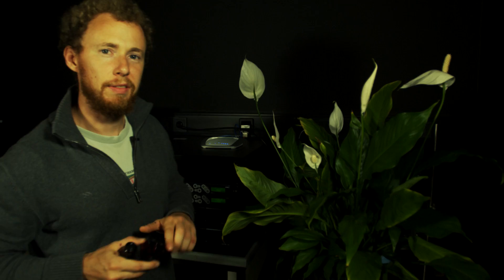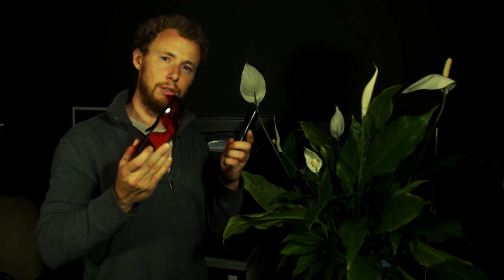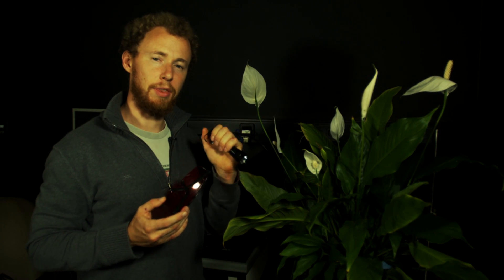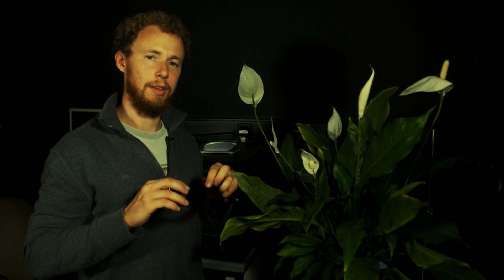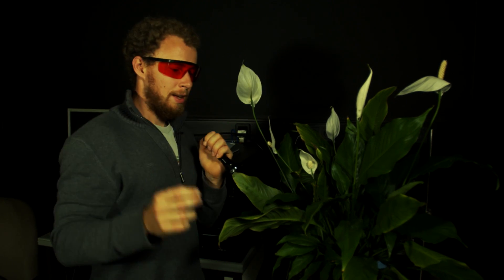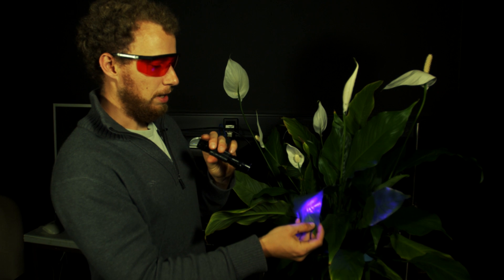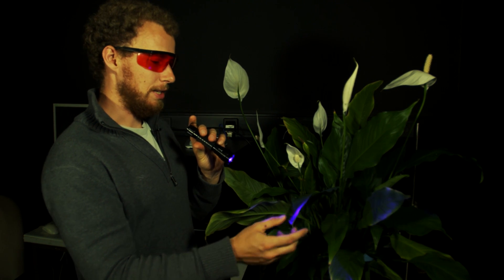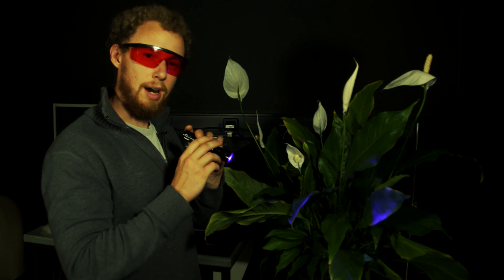We can make chlorophyll fluorescence visible using these two items. A blue flashlight which activates photosynthesis when shining on the leaf and red glasses which prevent the blue light from shining to our eyes. This way when wearing this and activating photosynthesis on the leaf, just the red light of the fluorescence is reaching our eyes. But to see that we need darkness.